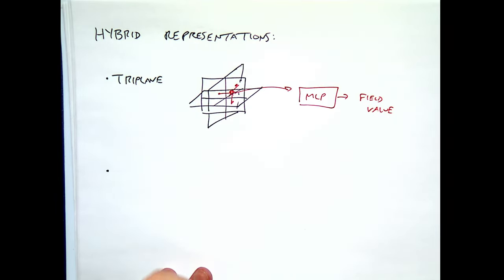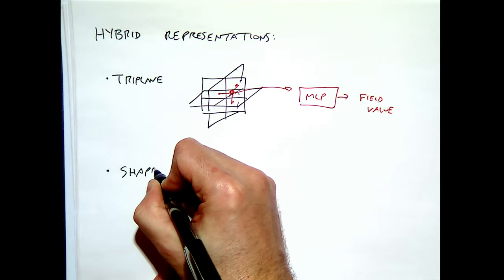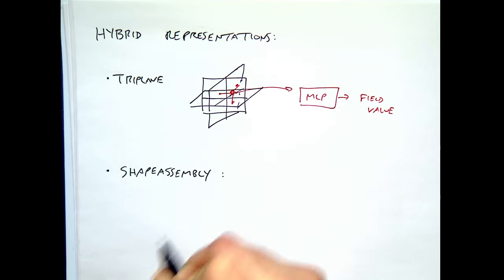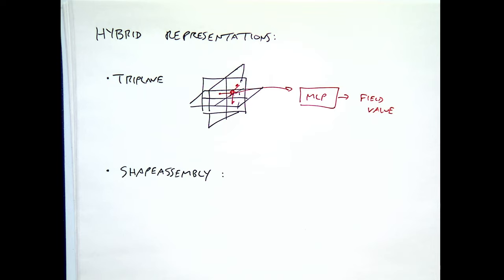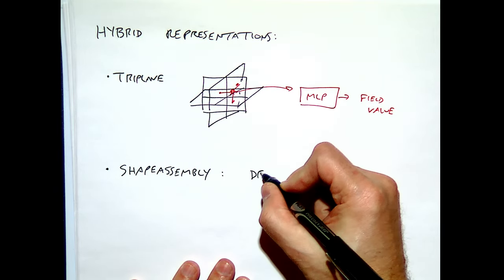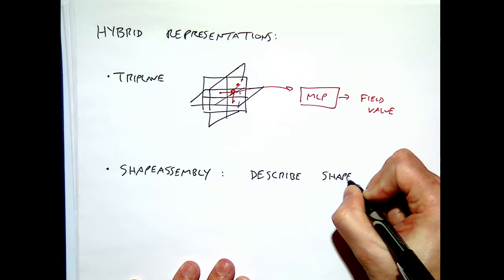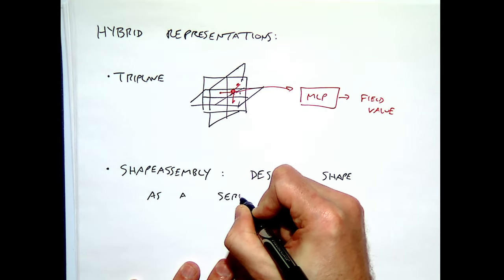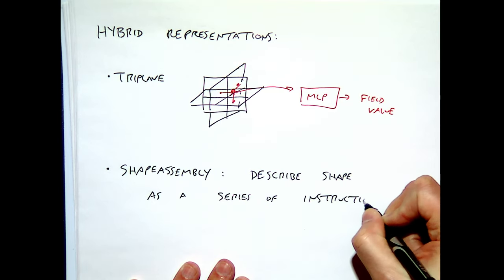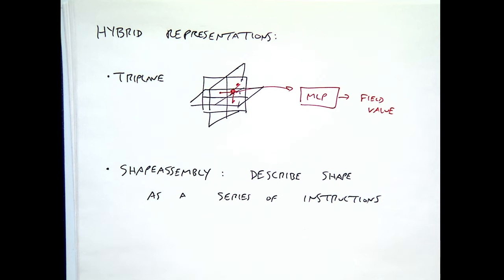Another idea I came across was a paper called Shape Assembly — thinking about constructing a solid shape as a set of instructions, like drawing a rectangle from here to here, building up a chair out of primitives. You describe the shape fully in some sort of assembly language. This was shown to work in a paper by Jones et al. from SIGGRAPH Asia.